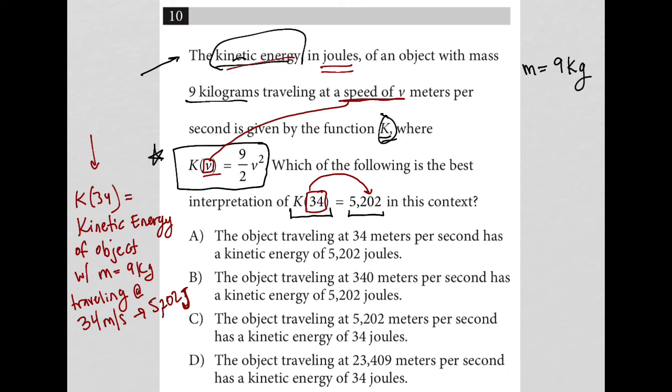So choice A says the object traveling at 34 meters per second has a kinetic energy of 5,202 joules. I love that answer. It's very straightforward. It is traveling at 34 meters per second. And yes, it does have kinetic energy of 5,202 joules being the unit. I'm going to look at the other ones, but I think A is the best answer.